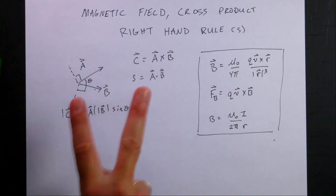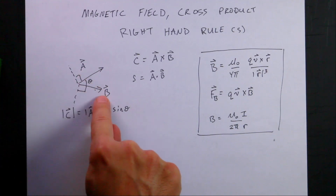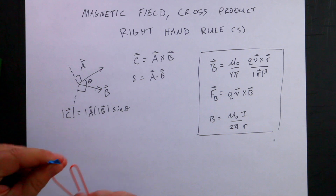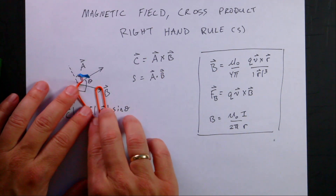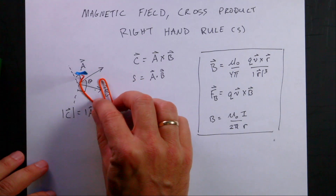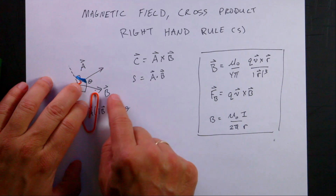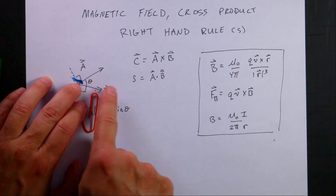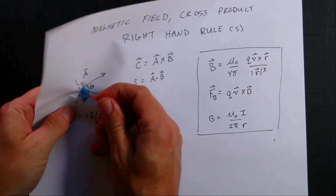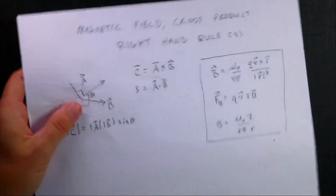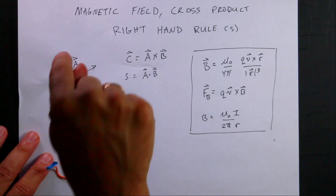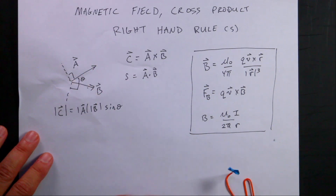There are only two vectors that are perpendicular to both vector a and vector b. I'm going to show you where they are using a paper clip. Here's one — it's pointing straight up, out of the paper, perpendicular to both a and b. The other one goes into the paper. So the two options are: out of the paper or into the paper. How do you know which one? That's where the right-hand rule comes in.